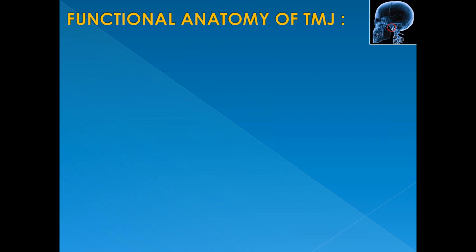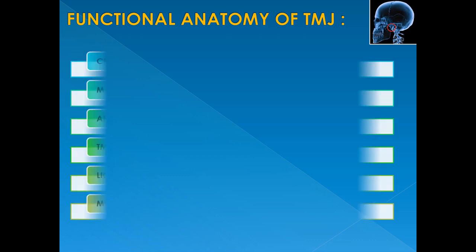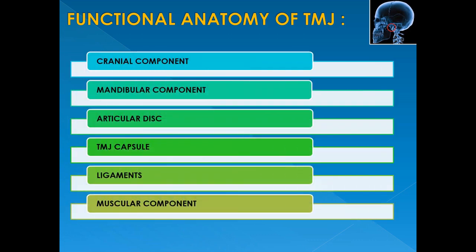The functional anatomy of the TMJ consists of six components: the cranial component, mandibular component, articular disc, TMJ capsule, ligaments, and muscular component.